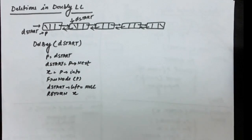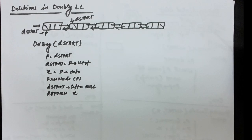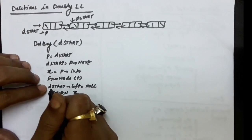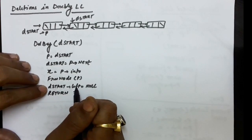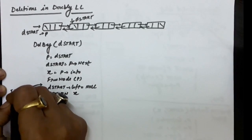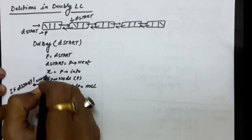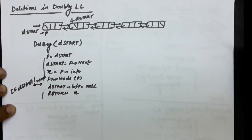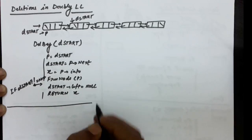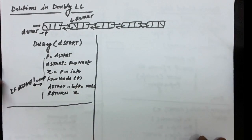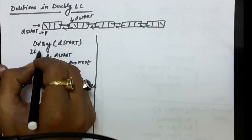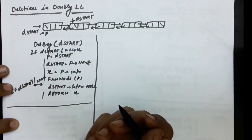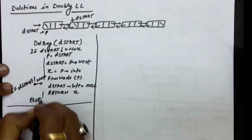Now consider the case where there is only a single node in the linked list. If you delete that node, D_start will become null. If D_start has already become null, then the assignment D_start dot left equals null has no meaning. So this assignment should be surrounded with a condition: if D_start is not null, then only perform this step. Additionally, you can delete any node only if nodes exist in the linked list, so everything works only if D_start is not null. If D_start is null, deletion is not possible.